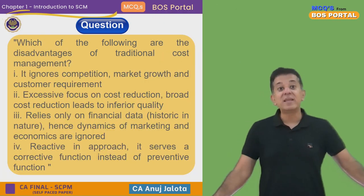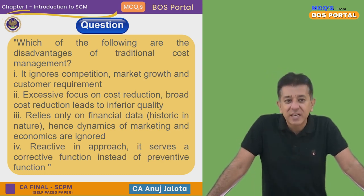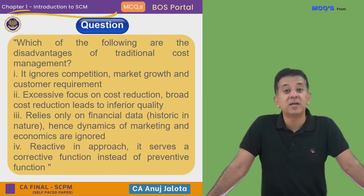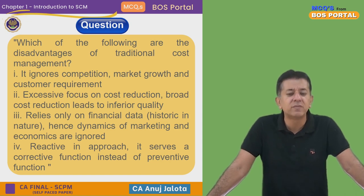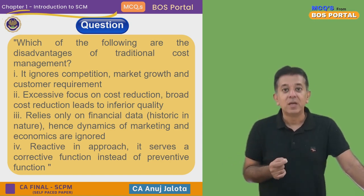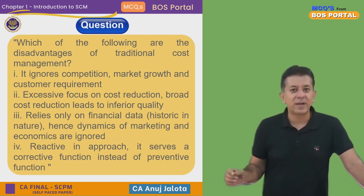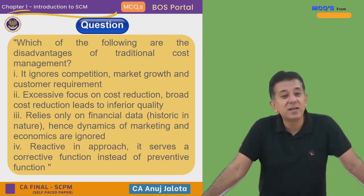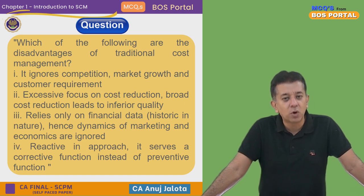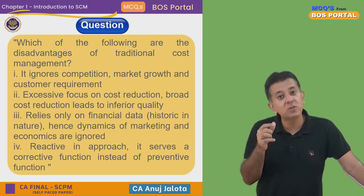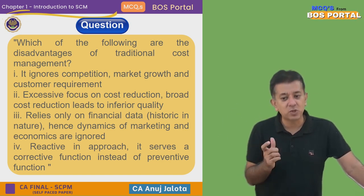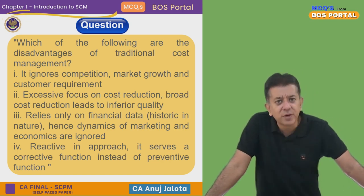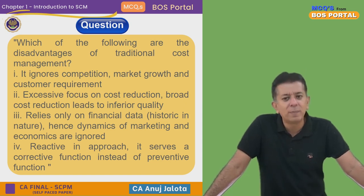The fourth disadvantage is that traditional cost management is reactive in approach — it serves a corrective function rather than a preventive function. Think of standard costing: we find out the variances at the end of the year and then try to think about what can be done. The bad has already happened. This is a major drawback. In contrast, under strategic cost management, we adopt techniques so that bad things don't happen in the first place — it is a preventive function that prepares us for the future.